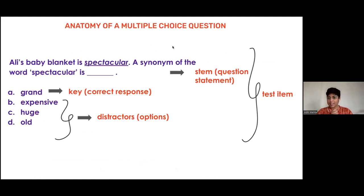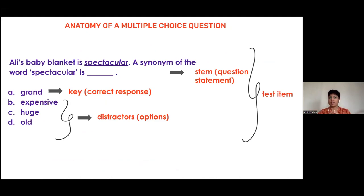Every multiple choice question has an anatomy. The whole piece is called a test item. As you can see on the screen, the sentence — for example, 'Ali's baby blanket is spectacular' — along with 'a synonym of the word spectacular is ___' — that is the stem, which is the question statement.